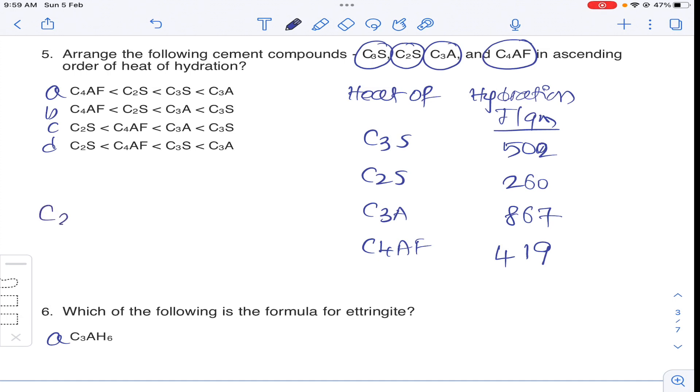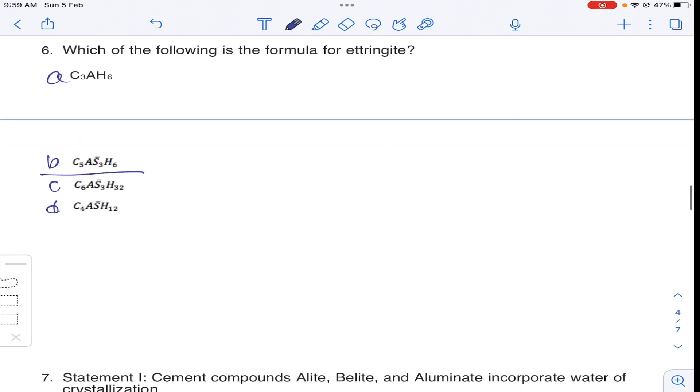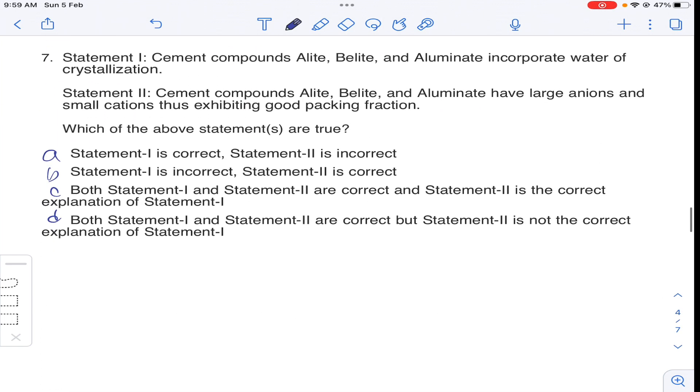So out of the given 4 compounds, C2S liberates very low heat. Then C4AF and then C3S and then C3A. So that is C3A liberates highest. So answer D for question number 5. And the formula of ettringite is answer B. It is a direct question. C3A·CaSO4·3H2O.